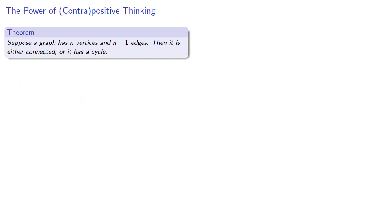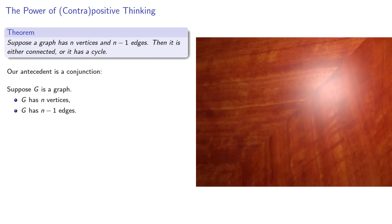So in the theorem that we proved, notice that the antecedent is actually a conjunction. Suppose G is a graph, G has n vertices, and G has n-1 edges. So let's rewrite our theorem so that our antecedent is an explicit conjunction.